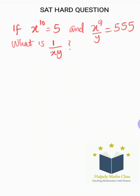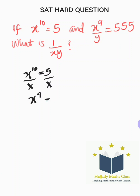x to the power of 10 equals 5, and x to the power of 9 over y equals 255. What is 1 over xy? To do this, rewriting: we have x to the power of 10 equals 5. Dividing both sides by x, I'm going to have x to the power of 9 equals 5 over x.